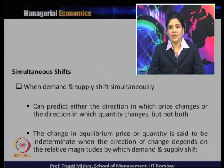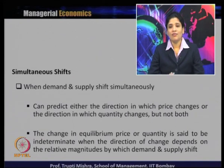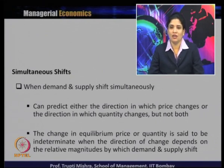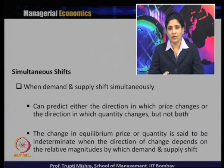We cannot say that if demand increases and supply decreases, the price has to be this or that, until the time the increase in demand or decrease in supply is not specified in magnitude. Since there is a change in the relative magnitude by which demand is decreasing or supply is increasing, it happens that the equilibrium price and equilibrium quantity become indeterminate.